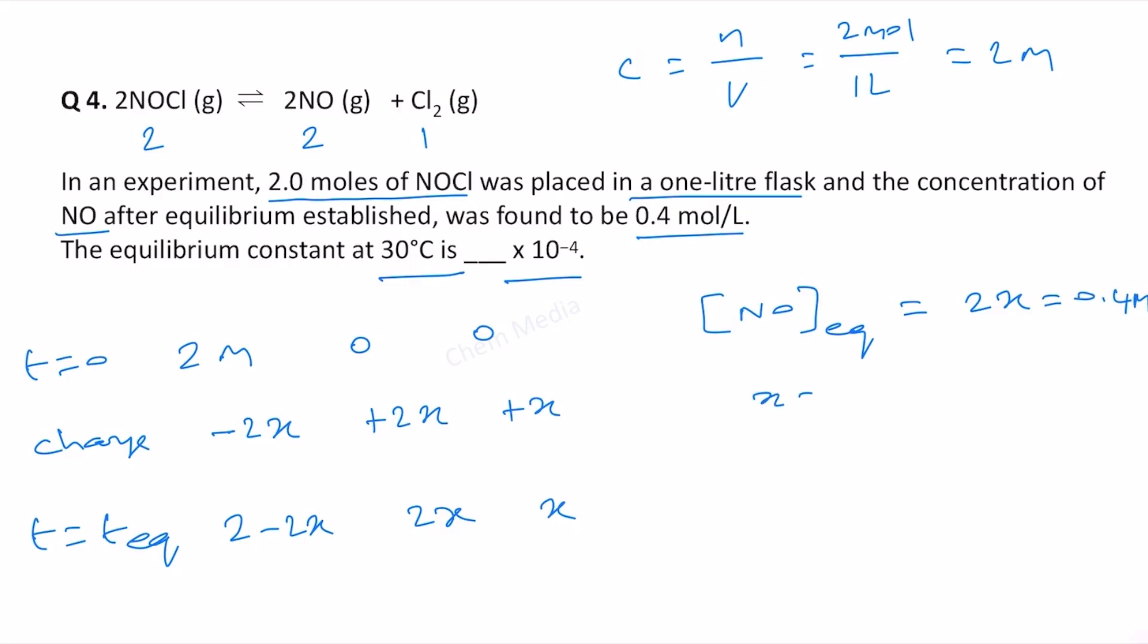So therefore x is equal to 0.2 molar. So therefore the concentration of NOCl at equilibrium is equal to 2 minus 2x and that is equal to 2 minus 2 times 0.2 and therefore that will be 2 minus 0.4 and that is equal to 1.6 molar.